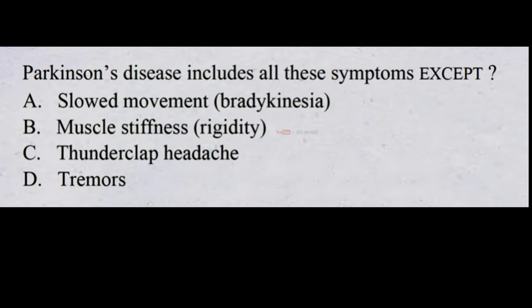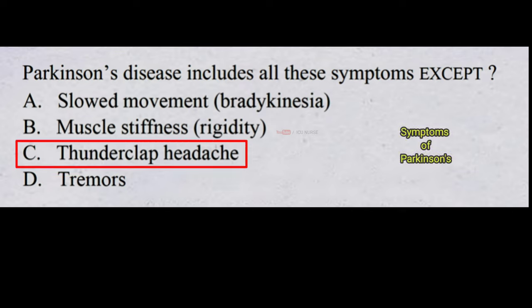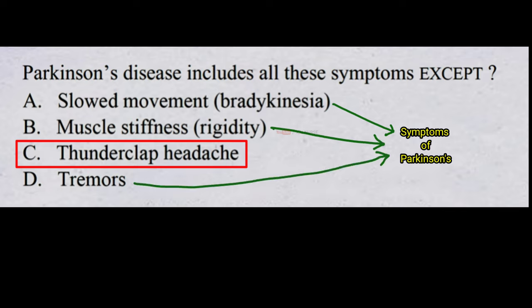Parkinson's disease includes all of these symptoms except: A. slowed movement — bradykinesia, B. muscle stiffness — rigidity, C. thunderclap headache, D. tremors. The correct answer is C, thunderclap headache. Bradykinesia, rigidity, and tremors are all symptoms of Parkinson's disease, whereas thunderclap headache is not.